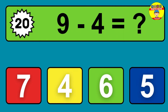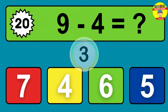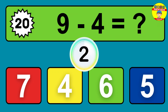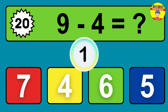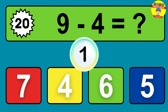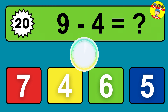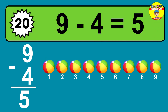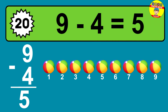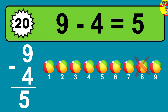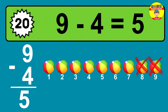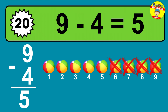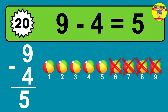Question twenty: nine minus four equals what? The answer is nine minus four is five. Let's count it: one, two, three, four, five.